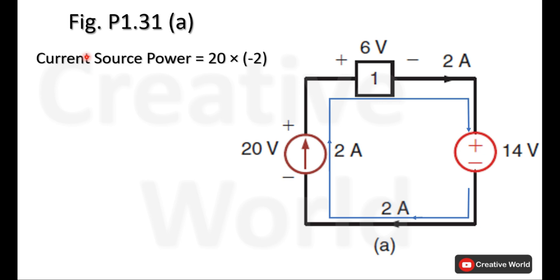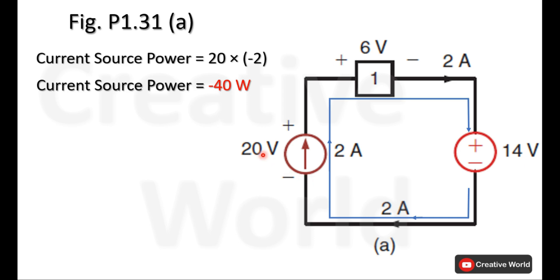The current source power will be the current through this current source multiplied by the voltage across it. The voltage across this current source is 20 volts and the current is 2 amperes. Because the current is entering from the negative terminal and leaving from the positive terminal, this current will be taken with a minus sign. The power of the current source will be minus 40 watts, indicating that this power is being supplied by the current source.